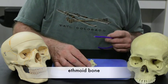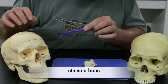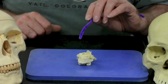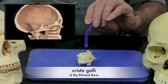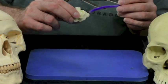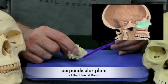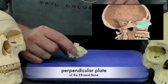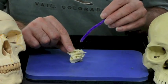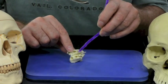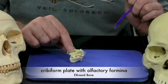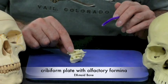The ethmoid bone, which is located in here — we can see that we have the crista galli, which is where the dura mater attaches. We can also see that we have the perpendicular plate of the ethmoid bone. And if we take a superior view, we can see that the holes on each side of the crista galli form the cribriform plate, which is the pathway for cranial nerve number one.